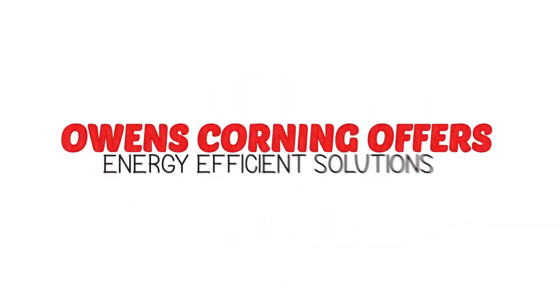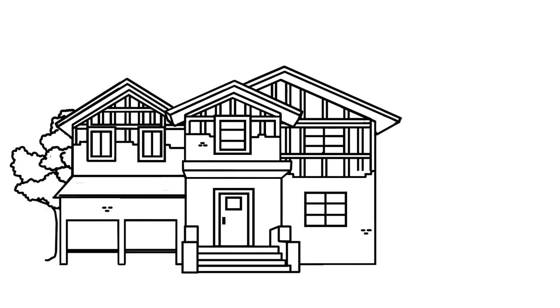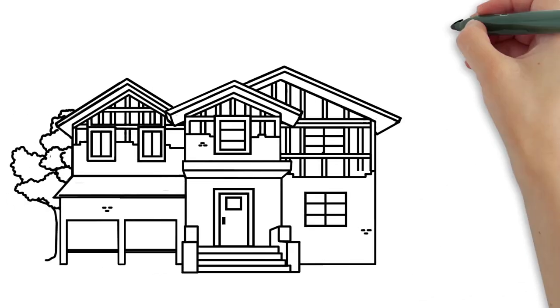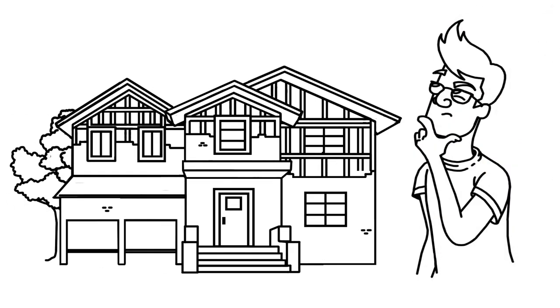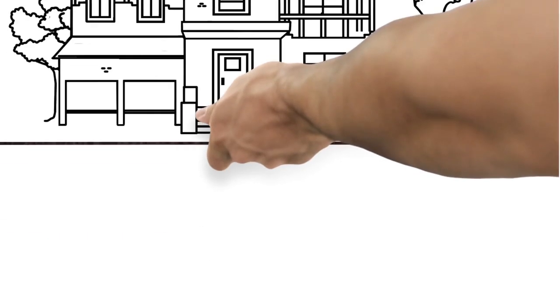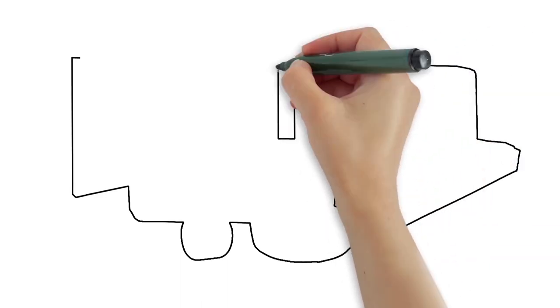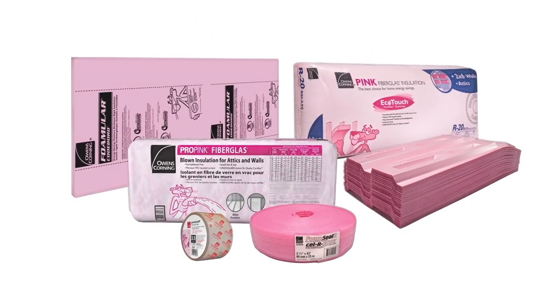Owens Corning offers energy-efficient solutions. Sam's new house is almost complete, and next door, John is nearly convinced to build a new home for himself and his family. The potential energy efficiency of a new home built with Owens Corning insulation and roofing was too much for John to ignore.